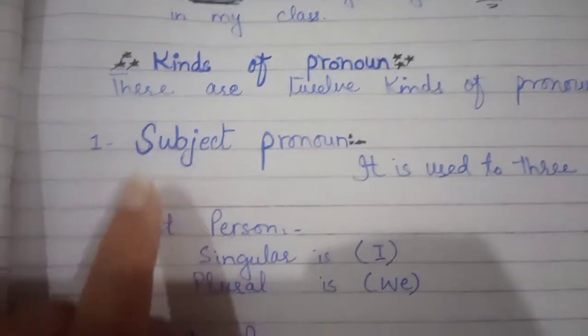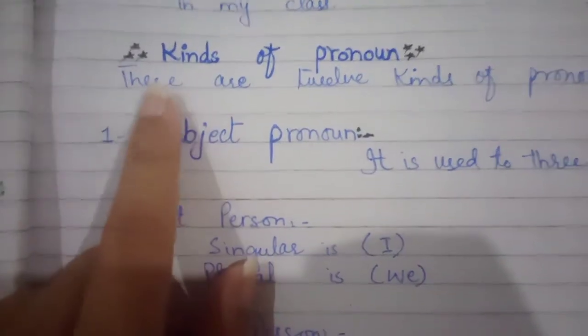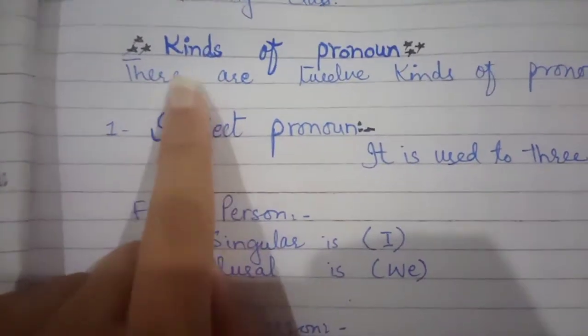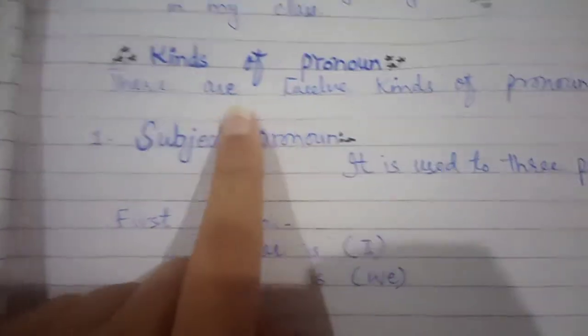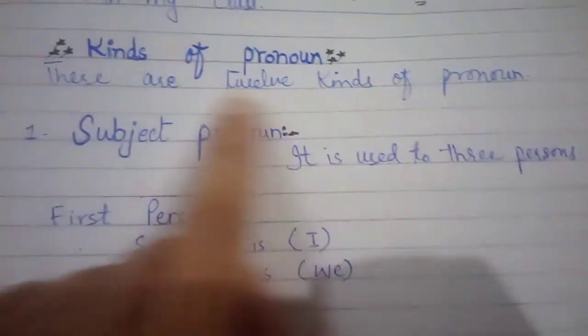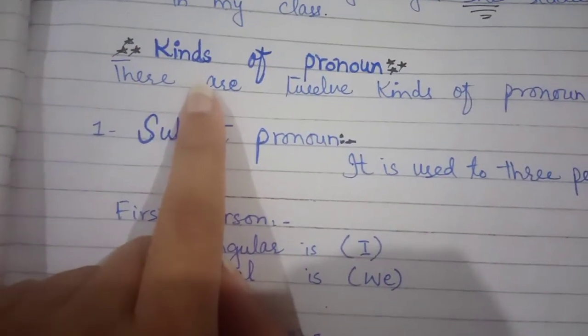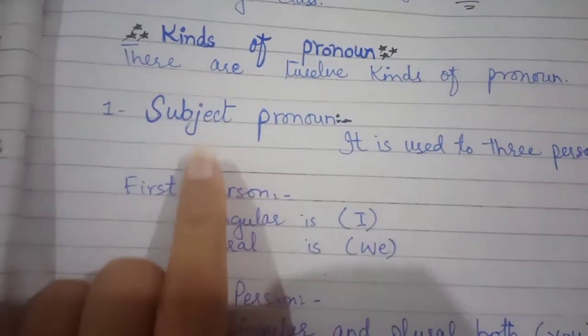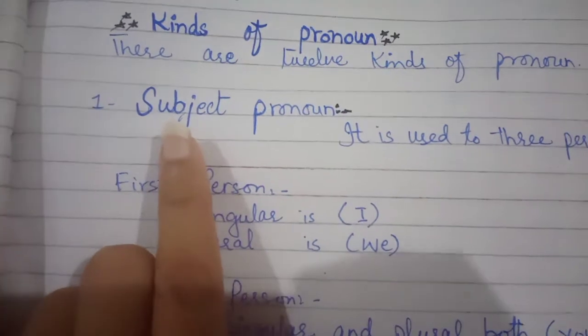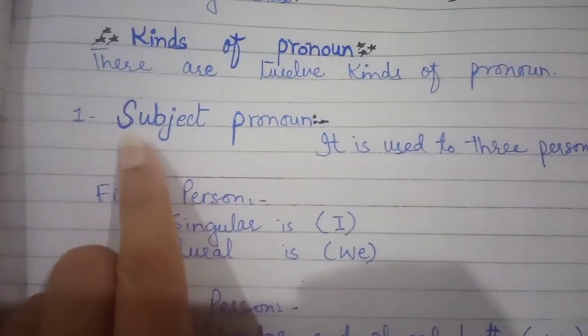Now we will discuss about the kinds of pronouns. There are 12 kinds of pronouns. Little by little I will tell you all about pronoun types.